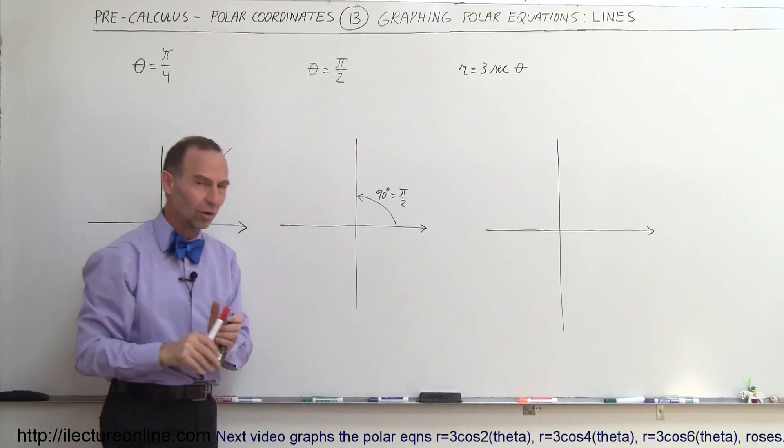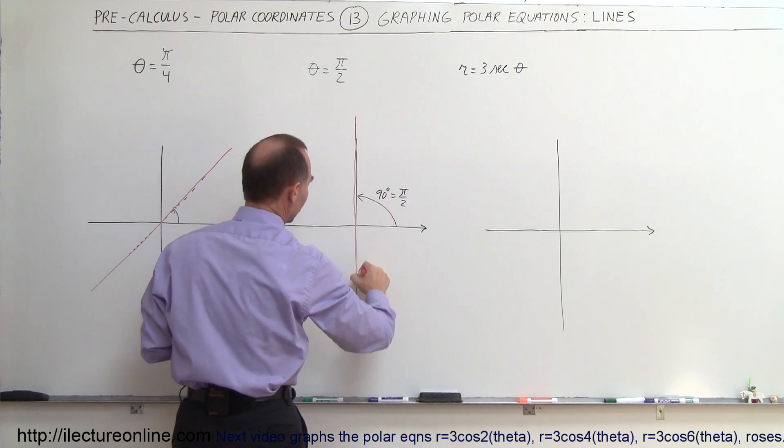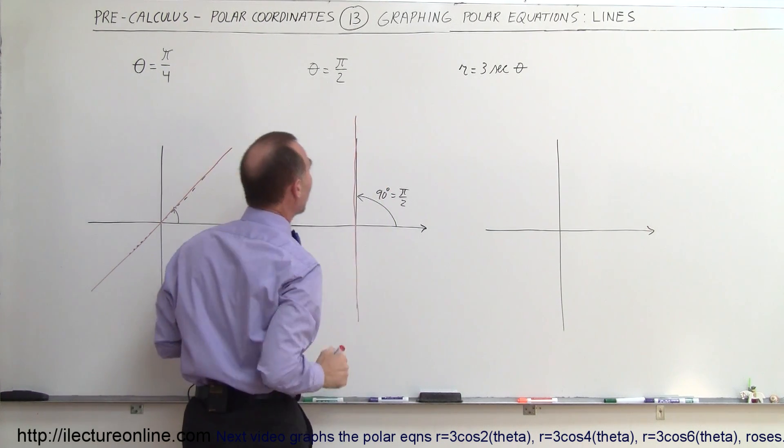Again, r has no restriction. r can be any value. So therefore, this is a straight line that represents the equation theta equals pi divided by 2.